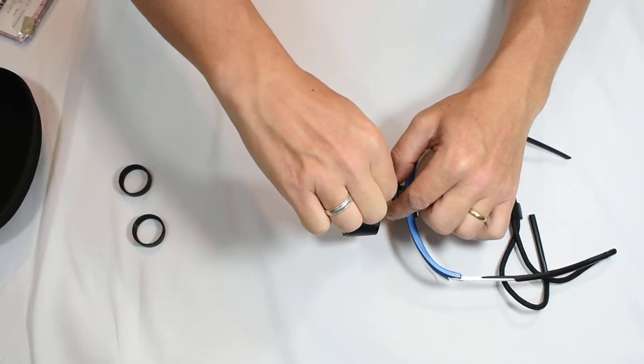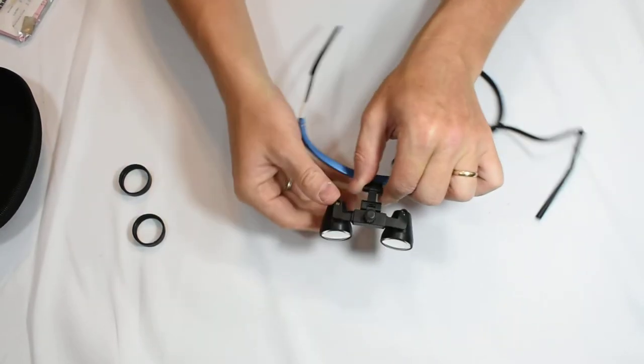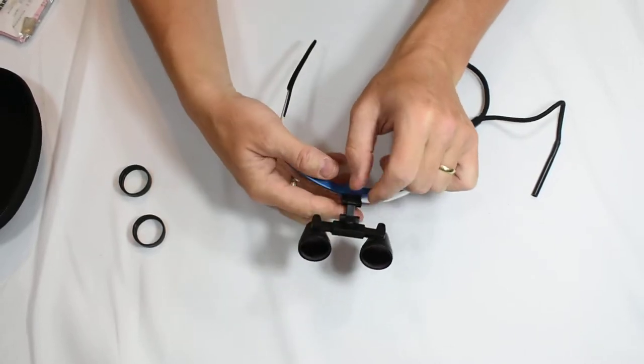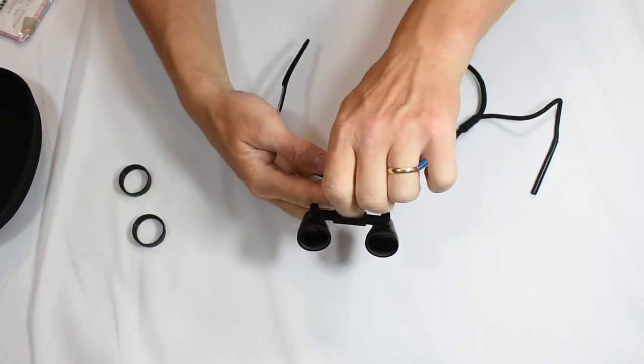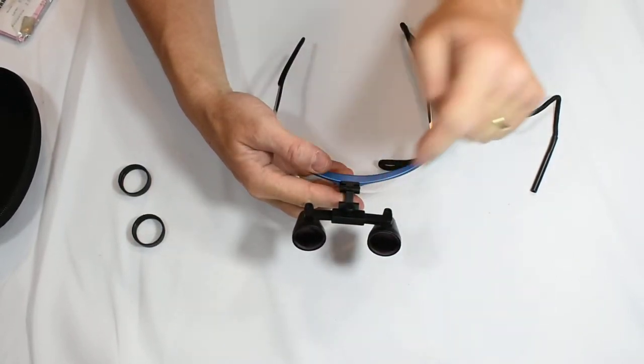And here on top we have the PD adjustment knob. You can see as I turn that knob that the telescopes themselves will move in and out.